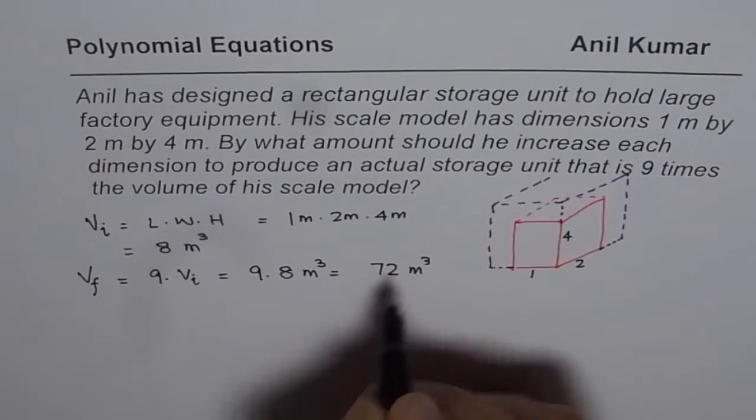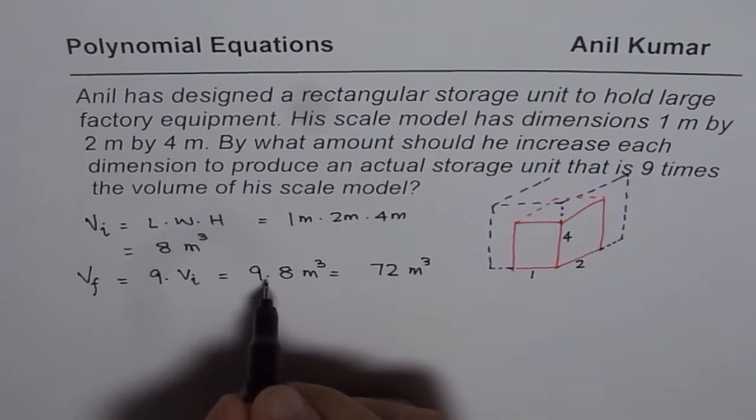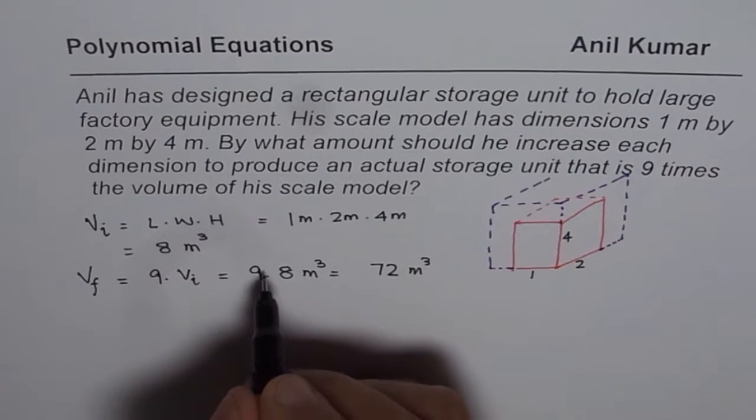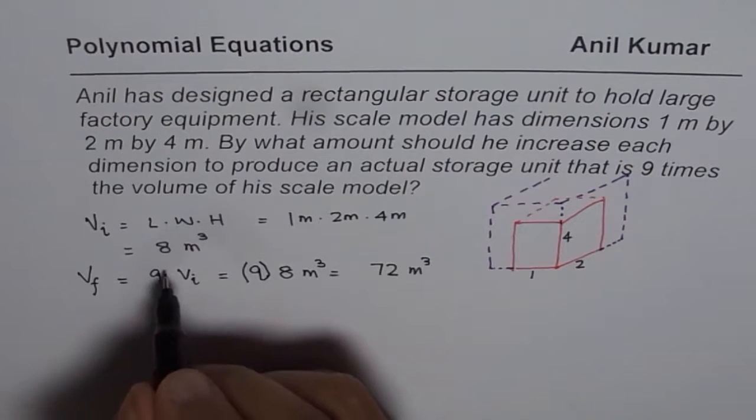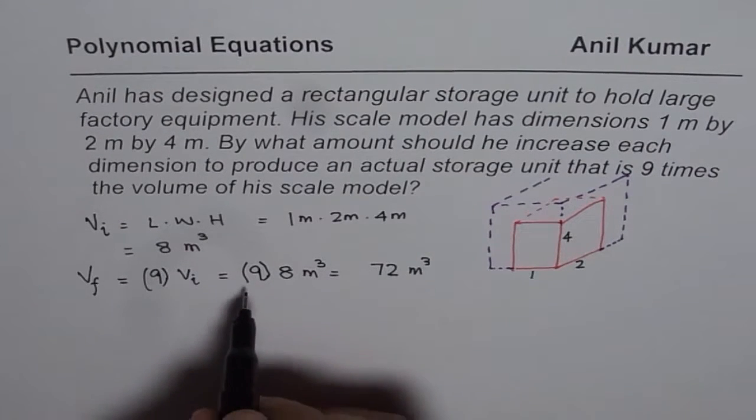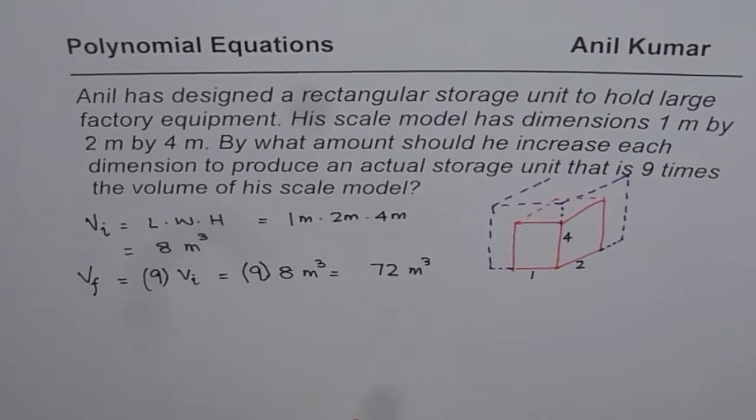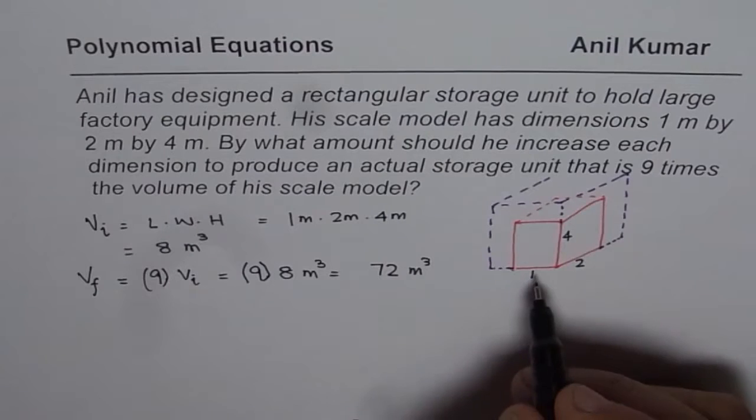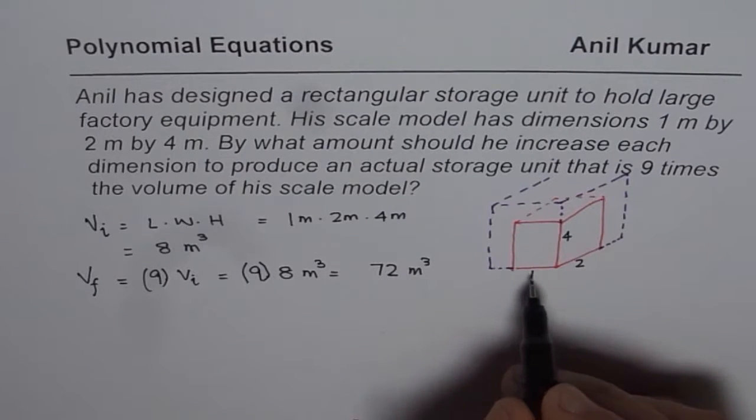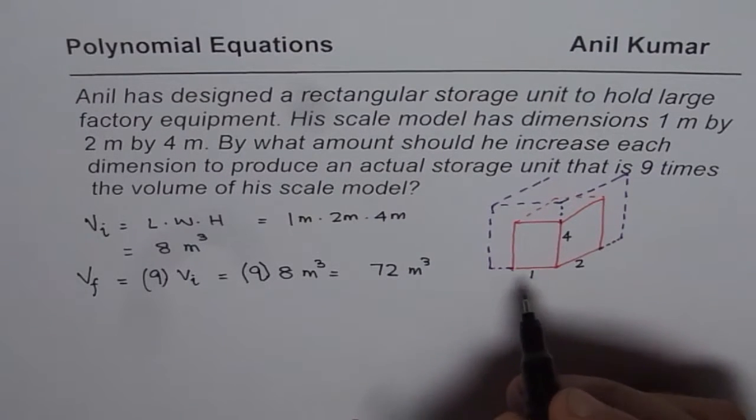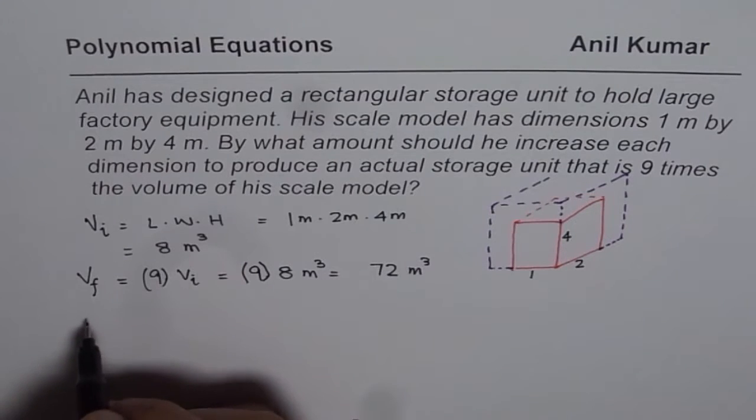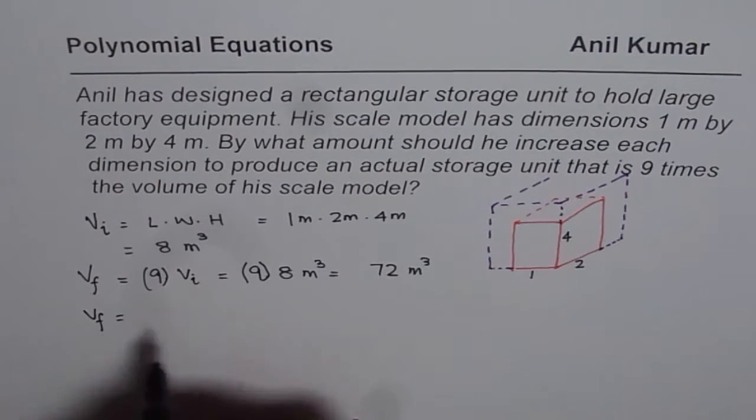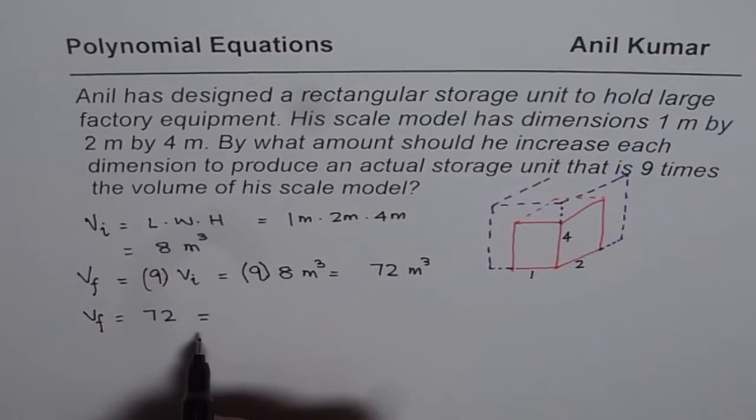Meter cube. Now I am writing decimals here. It does not mean decimals, it is a product kind of a thing. So 9 times Vi, so 9 times 8 is 72 meter cube. So that is the volume required. Now we know what are the dimensions. Since we increase the dimensions by 1 each, so what we have here is final volume, we need 72 meter cube.